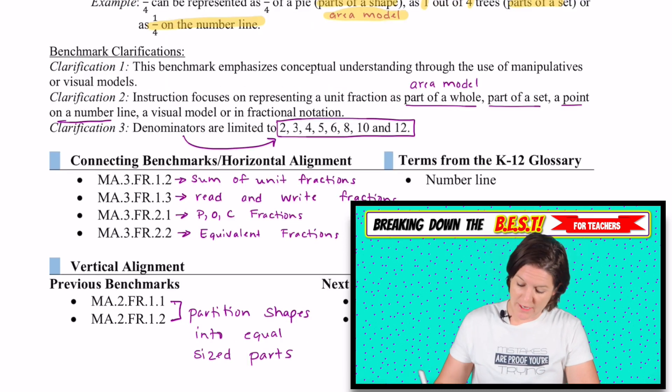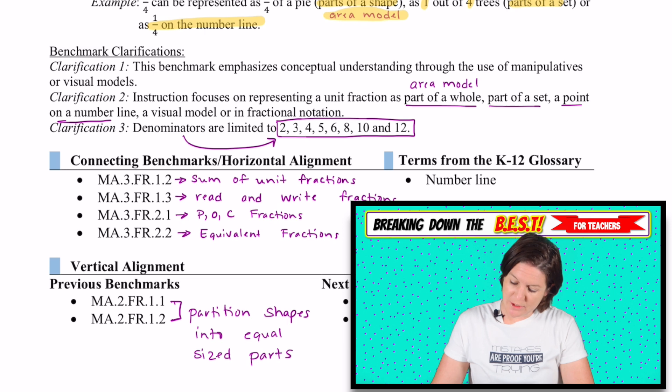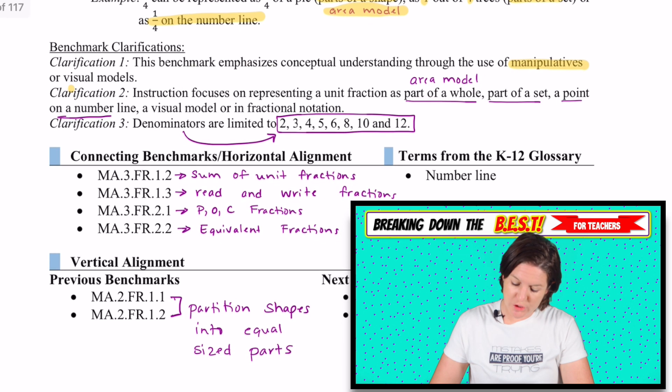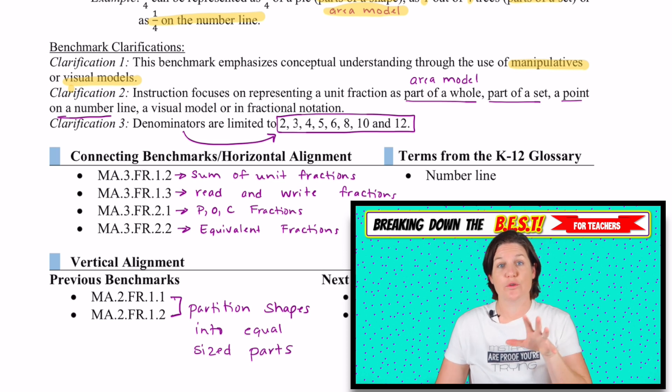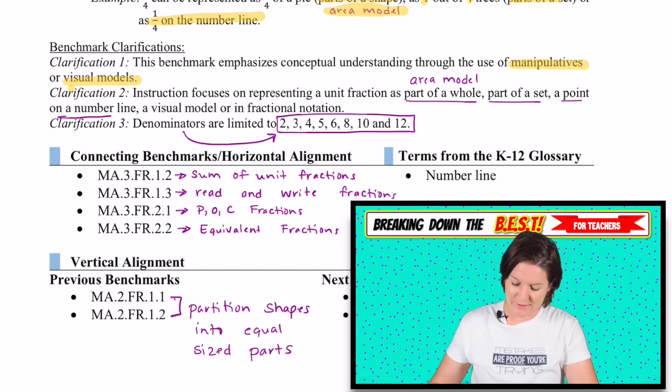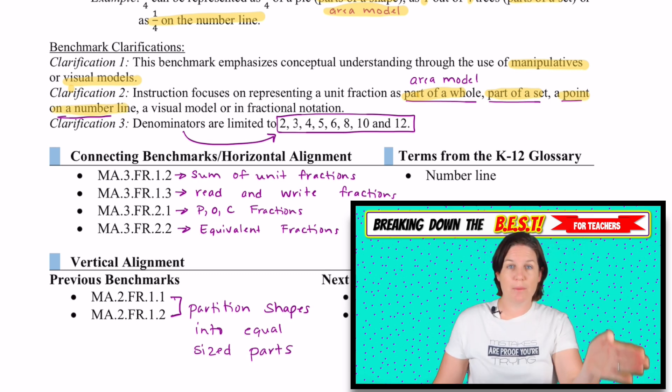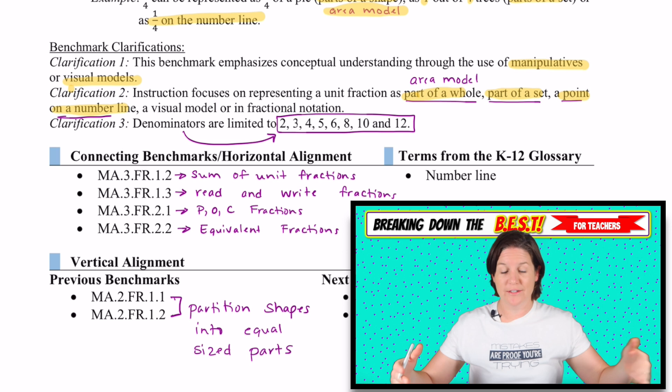Let's take a look at these clarifications. We definitely need to be using manipulatives and visual models when we can. Then taking on the BEST we will focus on those visual models. Hopefully you have access to manipulatives that you can tie into these video lessons. We'll be representing as parts of a whole, parts of a set, or a point on the number line, which is a part of a whole in a number line.